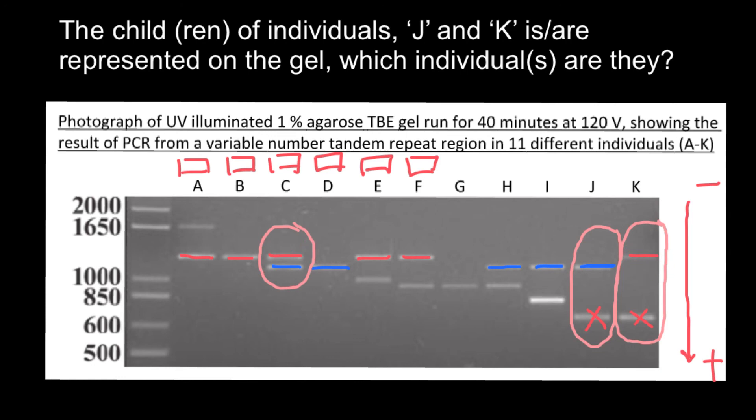Now you can easily tell that this person has both alleles - one from parent J and another allele from parent K. It is very easy to solve when you know which steps to take. That's all for today. Thank you for your attention. Please subscribe for my new videos that I post almost every day, thumbs up if you like this video, and write your comments and questions if you have any. See you in the next video, goodbye!